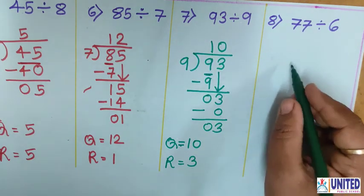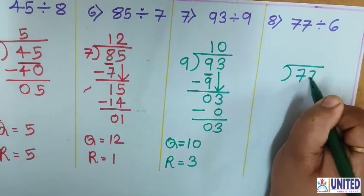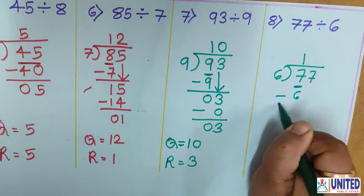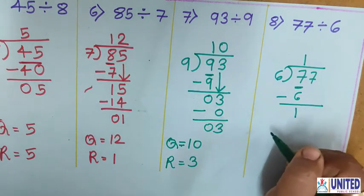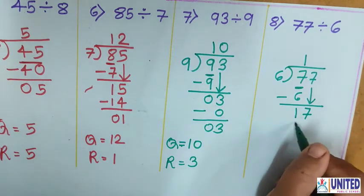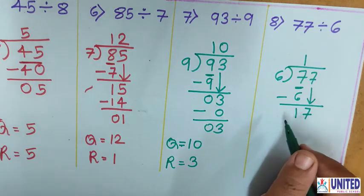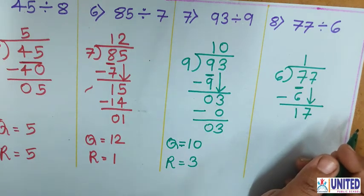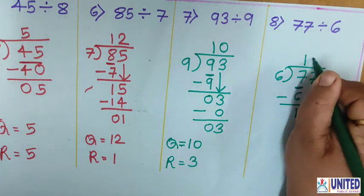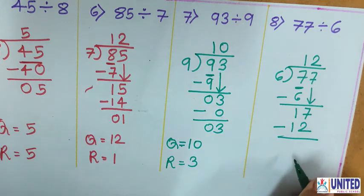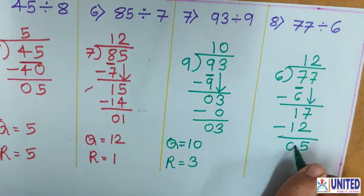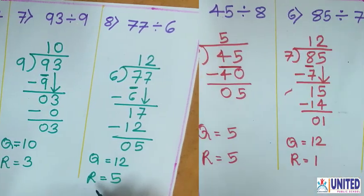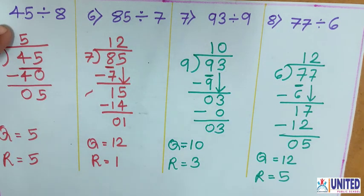Number 8: 77 divided by 6. See the first digit 7 — it is bigger than 6. 6 ones are 6. Write 1. Then 7 minus 6 is 1. Bring down the next 7, making 17. Does 17 come in the 6 table? No. Find the nearest: 12 — 6 twos are 12. Subtract: 17 minus 12 is 5. So Q equals 12 and R equals 5. In this way you can solve examples where dividend is 2 digits and divisor is 1 digit.